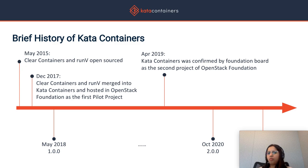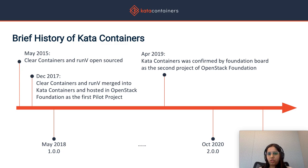To lay out a brief history of Kata: the project itself was started in December of 2017 as a result of the merger of the RunV project and the Intel Clear Containers project. In May 2018, we came up with our first major release, and in April 2019, Kata Containers was confirmed by the Foundation Board as the second project of the OpenStack Foundation.